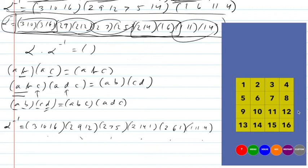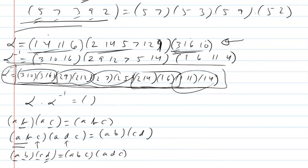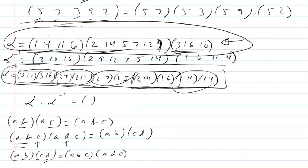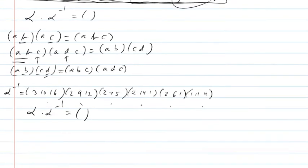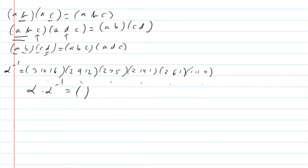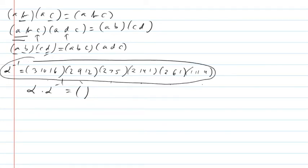And as you can see, that worked. Not surprisingly, alpha composed with alpha-inverse got me back to the beginning. My alpha was this complicated expression; my alpha-inverse: first I made it into 2-cycles, and then I combined the 2-cycles into 3-cycles — and in doing so, I was able to solve that puzzle.